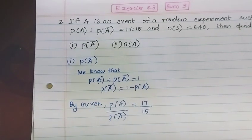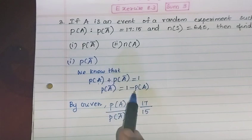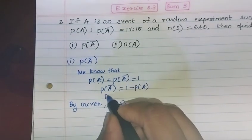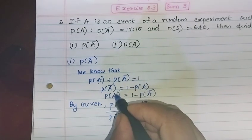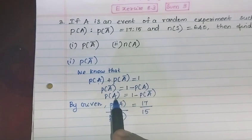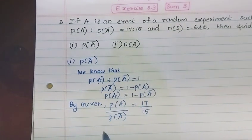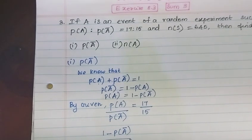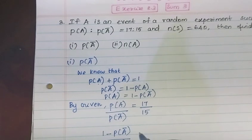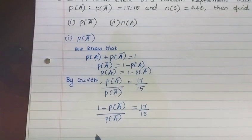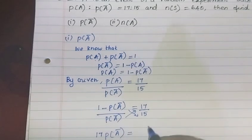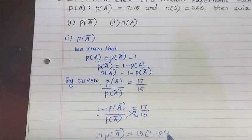P of A complement formula is 1 minus P of A. We will convert P of A as 1 minus P of A complement. So the ratio becomes: (1 minus P of A complement) by P of A complement is equal to 17 by 15. Cross-multiplying: 17 times P of A complement is equal to 15 into (1 minus P of A complement).